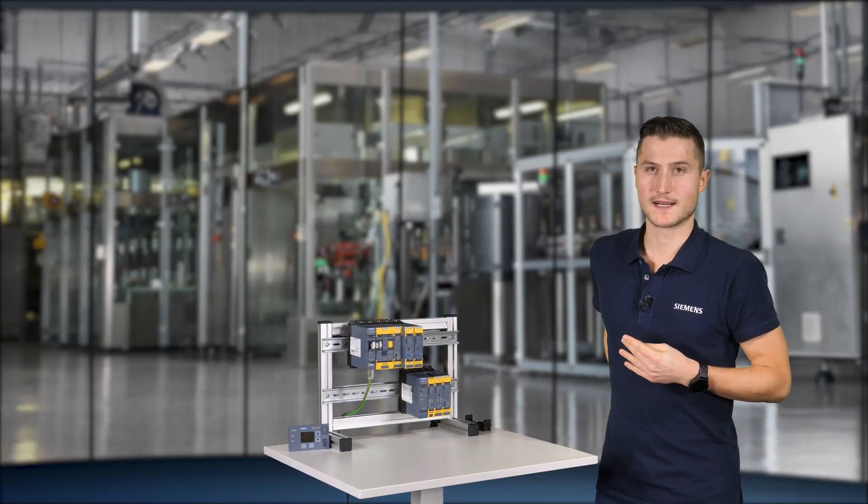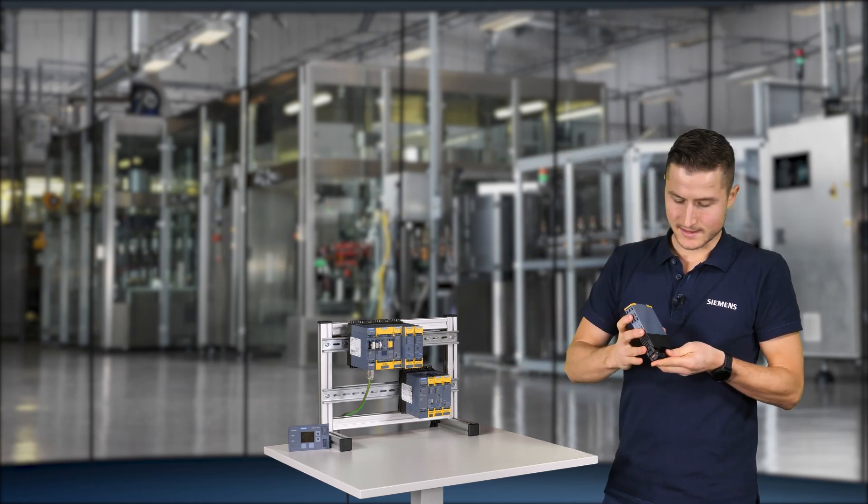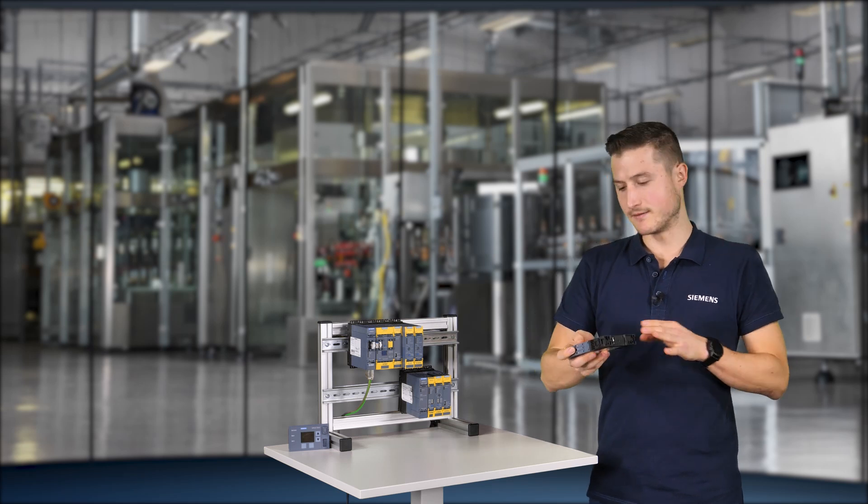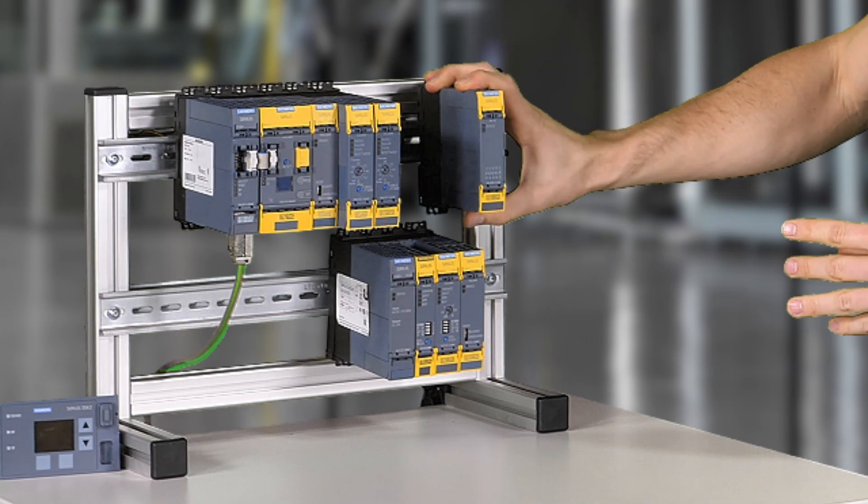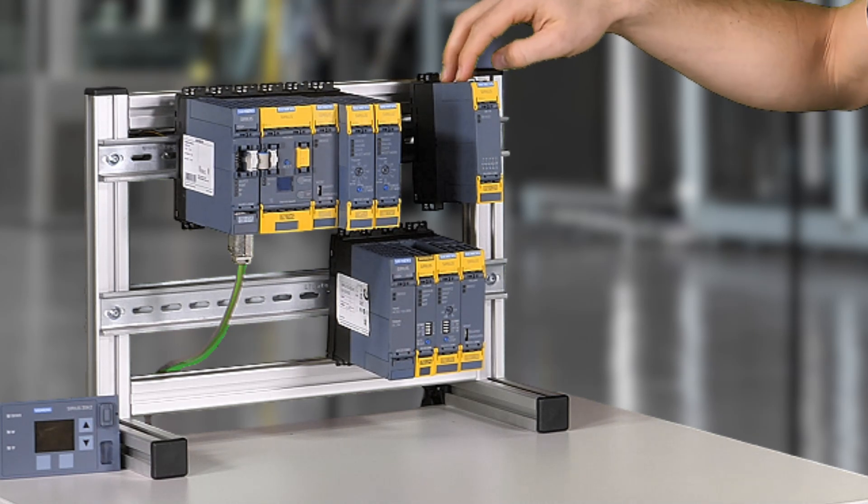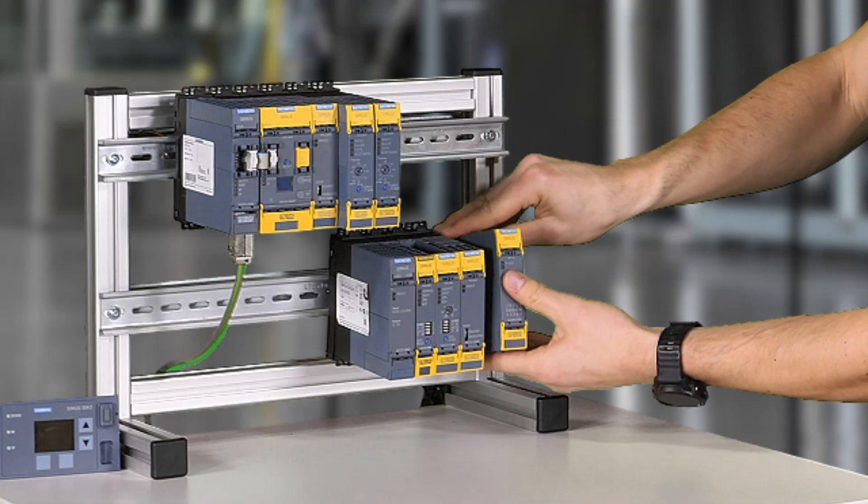Furthermore, the 3RQ1 forced guided coupling relays can be used as an expansion. They are just clicked, like the 3RM1 fail-safe motor starters, on the device connector and then added. Also, like the output expansion and the motor starter, the force guided coupling relays can be used both for 3SK2 and 3SK1 advanced.